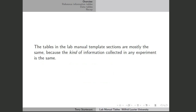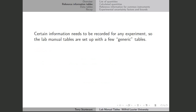The lab manual is set up so that the tables form a kind of template that can be used for any experiment. In any kind of experiment you do, there are certain kinds of information that you record, so the lab manual tables are set up to make that generic, so you can understand how you would record the information from any experiment.